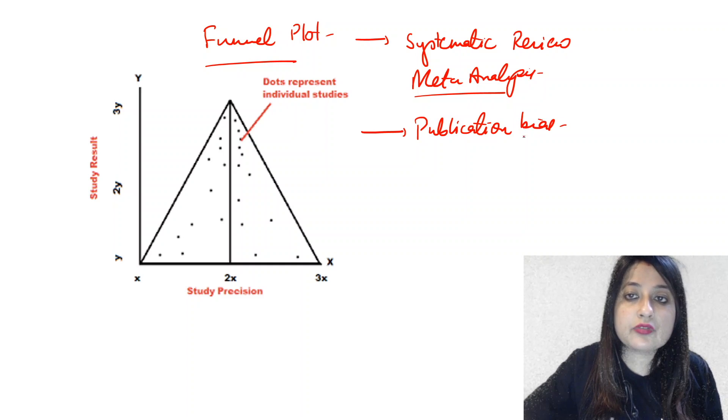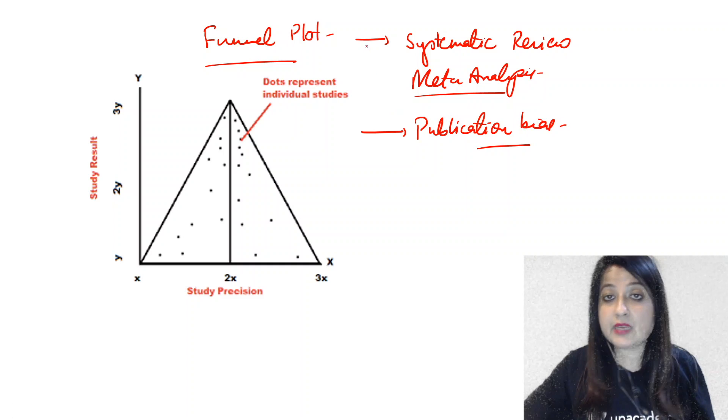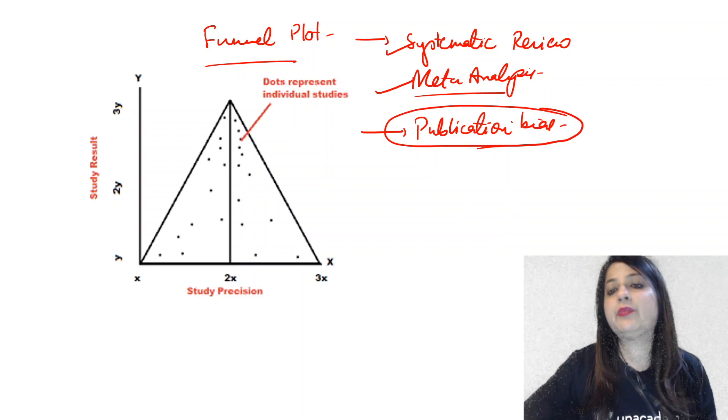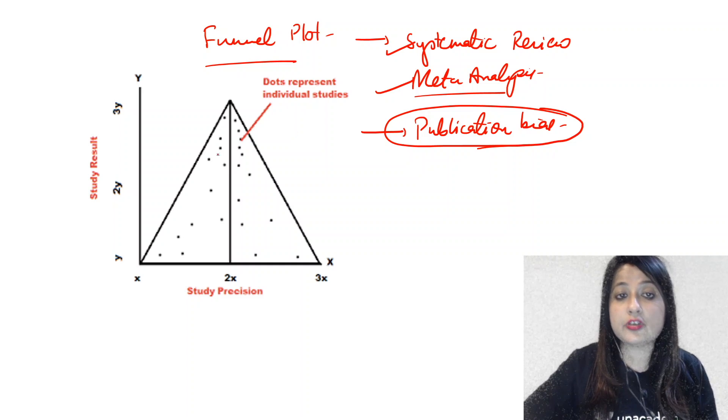So what are the MCQs that can come? Funnel plot is drawn both for systematic review, meta-analysis and it represents what is known as publication bias.